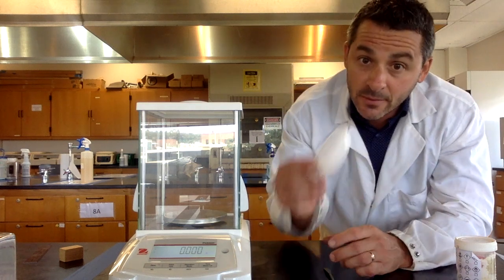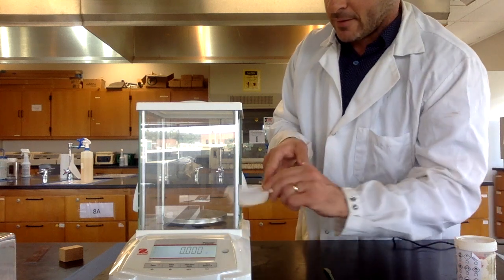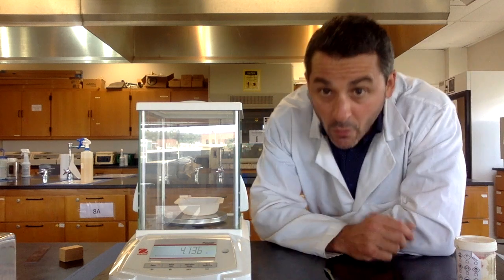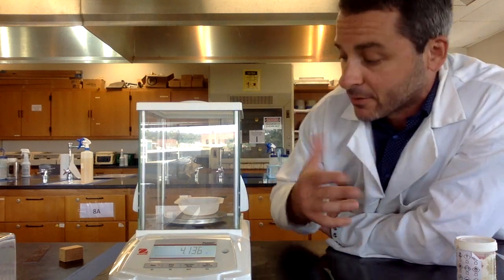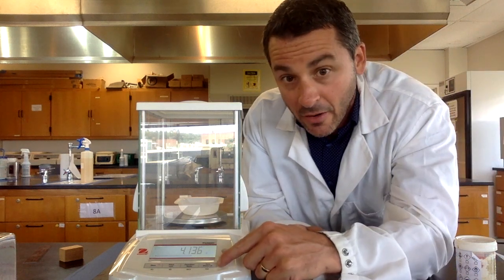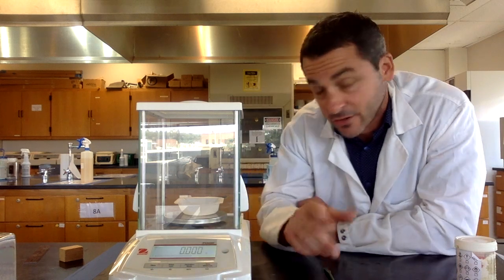So what you do is you take a weigh boat and you put that on the balance there. Now that obviously has mass and we don't want that mass. We don't care what the weigh boat weighs. So what you do is you hit the tare button, T-A-R-E. That will set the balance to zero with your weigh boat on there.